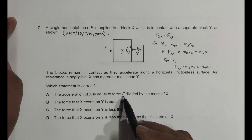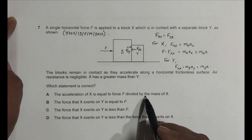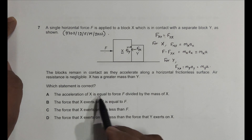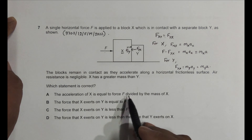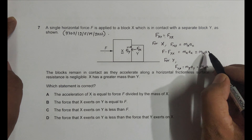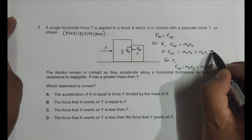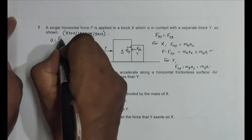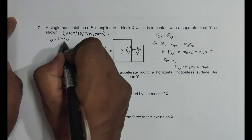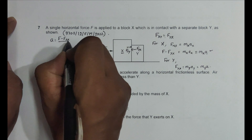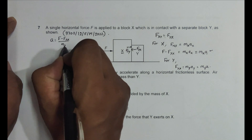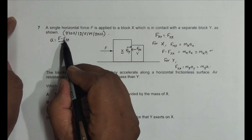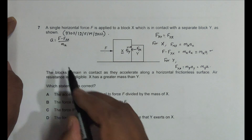Option A claims that the acceleration of X equals F divided by M_X. This is not true, because from Newton's 2nd law applied to X, we have a = (F - F_YX) / M_X. There is an additional force F_YX acting on X, so the acceleration is not simply F over M_X.